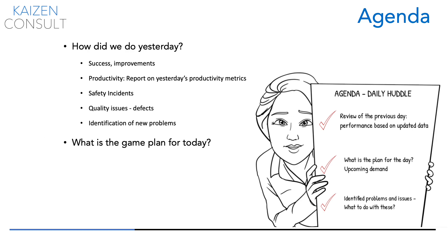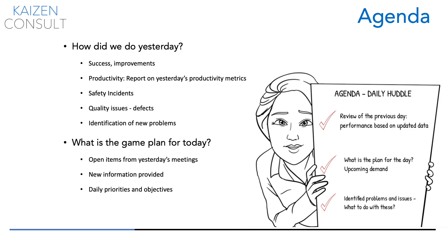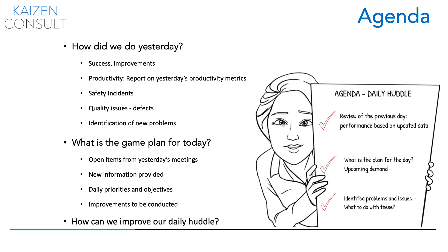Then, what is the game plan for today? Any open items from yesterday's meeting? Any new information provided with a short-term look? What are the daily priorities and objectives? What is the performance level, takt time, and resource allocation? Any improvements to be conducted today? And finally, how can we improve our daily huddle? Make a quick round of reviews of the daily huddle to help measure the efficiency of the meeting.